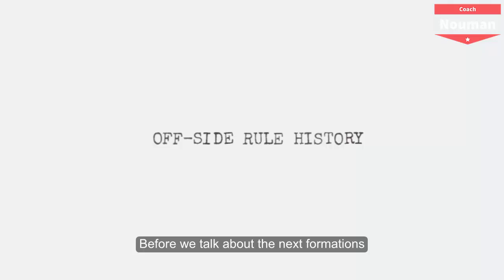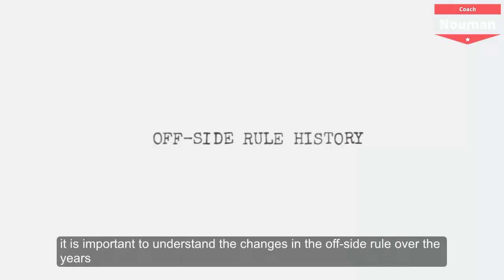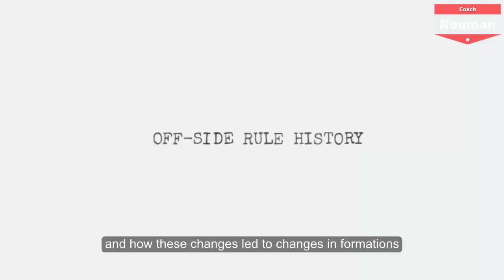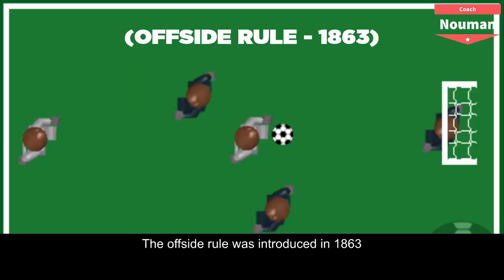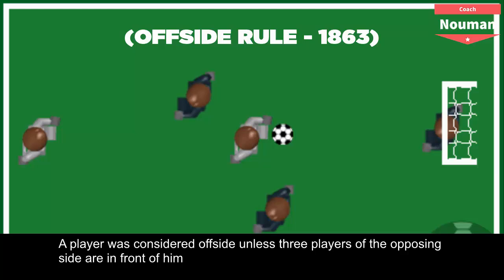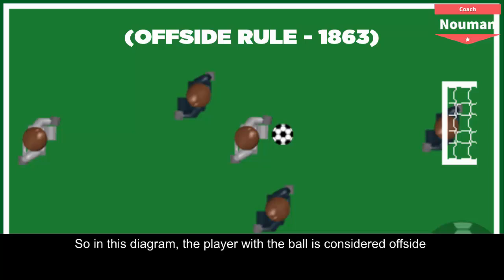Before we talk about the next formations, it is important to understand the changes in the offside rule over the years and how these changes led to changes in formations. The offside rule was introduced in 1863. A player was considered offside unless three players of the opposing team were in front of him, including the goalkeeper. In this diagram, the player with the ball is considered offside because only two players are in front of him: the centre-back and the goalkeeper.